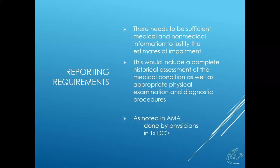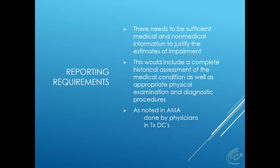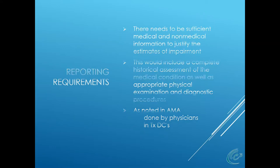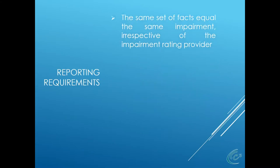This would include a complete historical assessment of the compensable medical condition, as well as an appropriate physical examination and a discussion of all diagnostic procedures. A key question in establishing the final whole person impairment rating is whether there is electrodiagnostic evidence of a verifiable radiculopathy — we'll talk about that in a few minutes. As noted in the AMA guides, the impairment rating is to be done by physicians, though here in Texas we know they're also done by chiropractors. The purpose is that the same set of facts will equal the same impairment irrespective of the impairment rating provider.